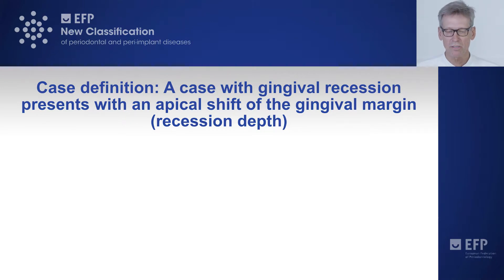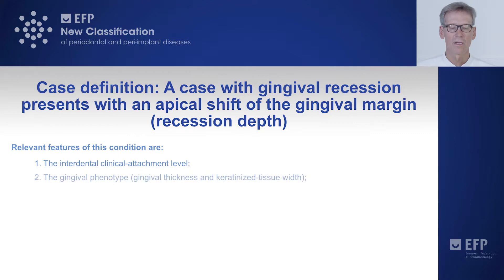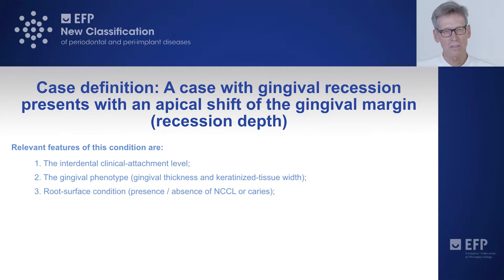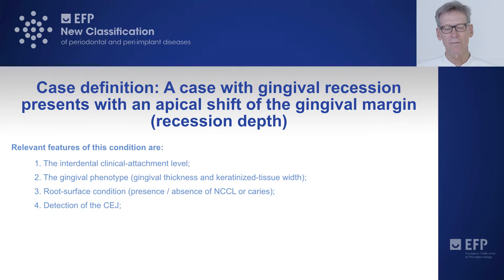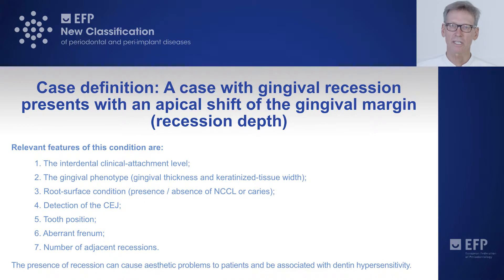We came up with case definitions. A case with gingival recession presents with an apical shift of the gingival margin — the recession depth. Relevant features for this condition include: the interdental clinical attachment level, the gingival phenotype, the root surface condition, presence or absence of NCCL or caries, detection of the cementoenamel junction (CEJ), tooth position, apparent frenum, and the number of adjacent recessions. The presence of recession can cause aesthetic problems and can be associated with dentin hypersensitivity.